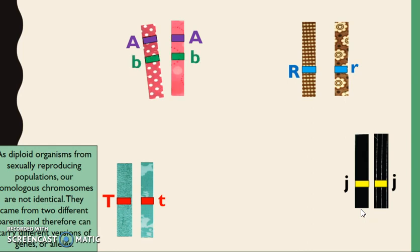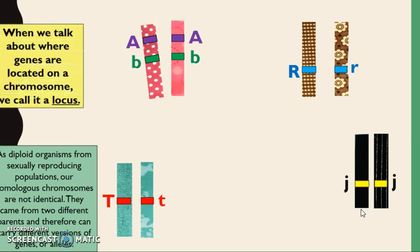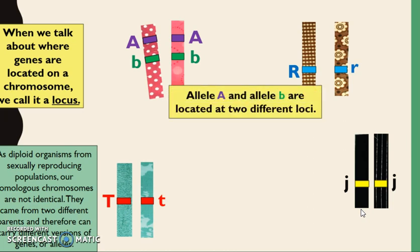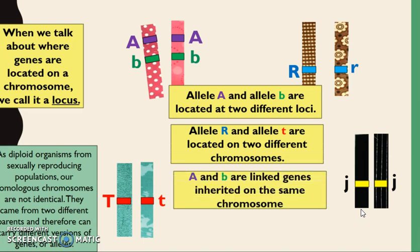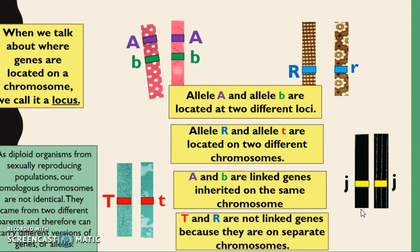When we talk about where a gene is located on a chromosome, similar to an address on a street, we call this a locus. Locus is singular; if we're talking about more than one, we would say loci. Alleles A and B are linked on the same chromosome unless crossing over separates them, while R and T are not linked because they're on separate chromosomes.